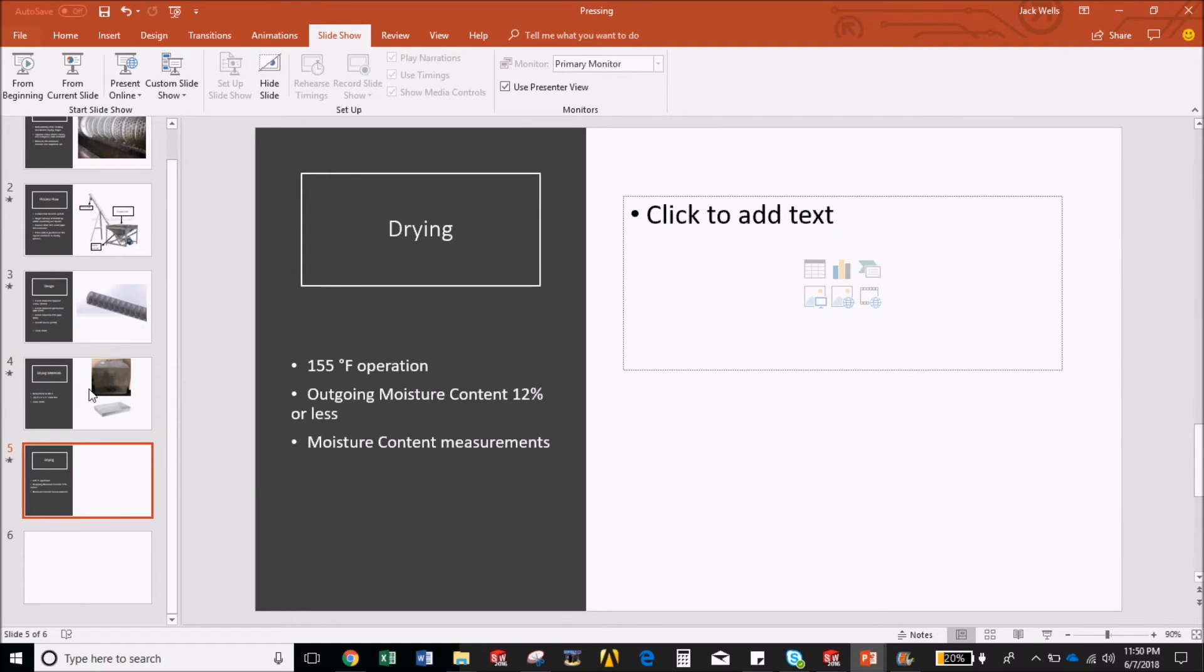After putting the steel pans in the dehydrator it will be operated at its max temperature of 155 degrees Fahrenheit in order to get the press cake to 12% moisture content or lower.